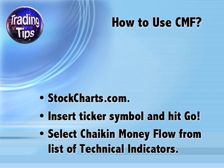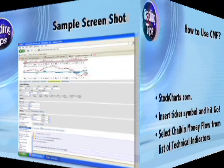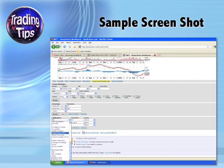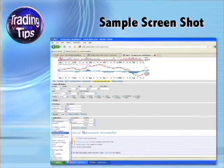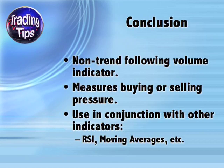You can use CMF by making a chart at stockcharts.com, a free site. Simply go to that website, insert the ticker symbol of your choice, and hit go. Then select Chaikin Money Flow from the list of technical indicators. You can also choose your value for X and select additional indicators and overlays to appear along with CMF on your chart. Here's a sample screenshot showing you exactly how to select Chaikin Money Flow at stockcharts.com after you've already entered your chosen ticker symbol and hit go.